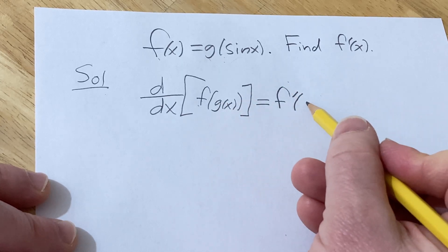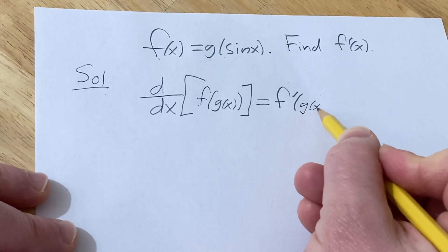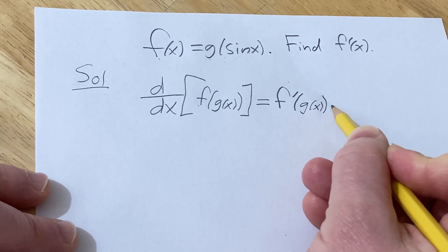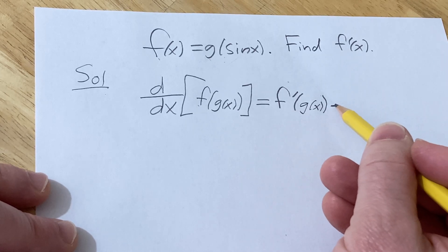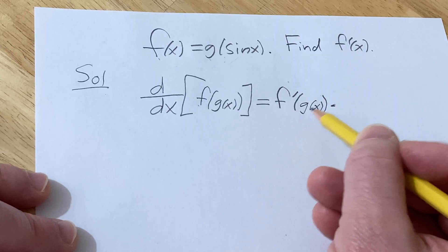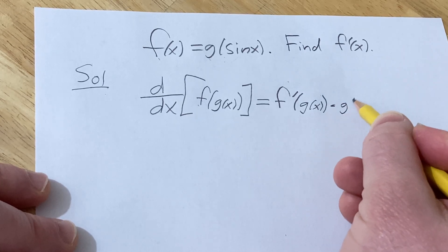and then you leave the inside function untouched and then you multiply by the derivative of the inside function. So in this case the inside function is g, its derivative is simply g'(x).